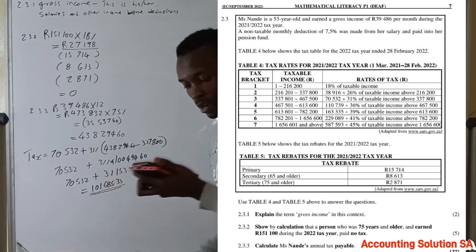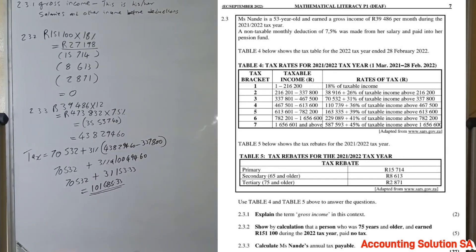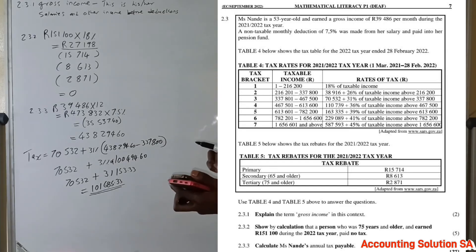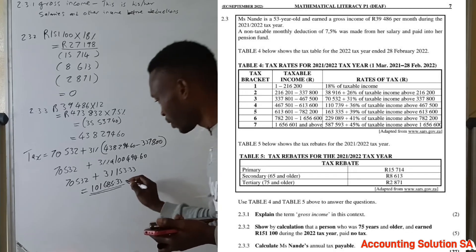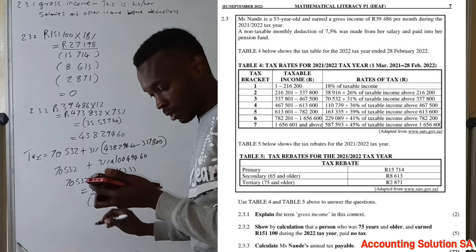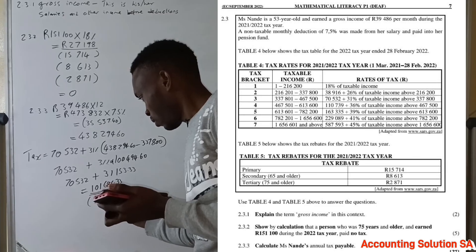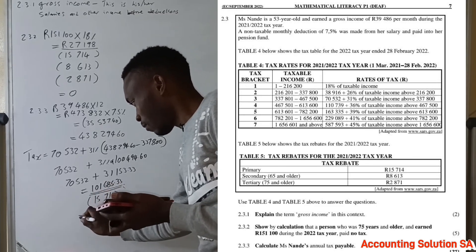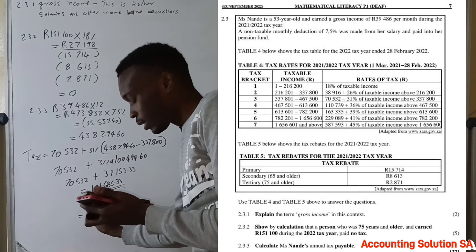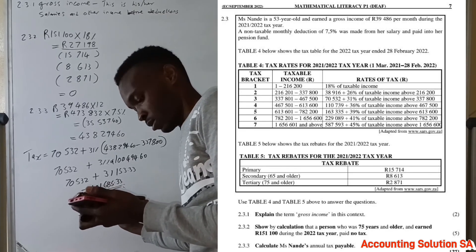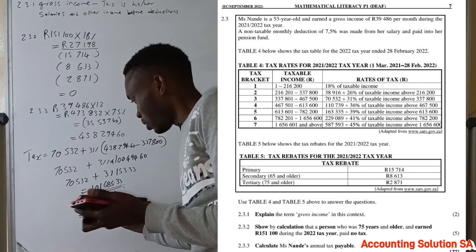But this is not the final answer. We now go and subtract the primary rebate. This person is 53 years old and does not qualify for the secondary rebate because she is not older than 65. So we subtract only the primary rebate of R15,714. After subtracting R15,714 from R101,685.33, this person will pay R85,971.33. This is the final answer.